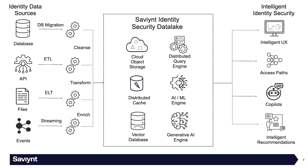All of this storage layer powers the distributed query engine — a petabyte-scale query engine that can churn through massive quantities of identity data. We also have an AI and ML engine that provides recommendations, and a generative AI engine for co-pilot experiences. All of these together deliver an intelligence UX providing access paths, co-pilots, and intelligent recommendations for intelligent identity security for your enterprise.